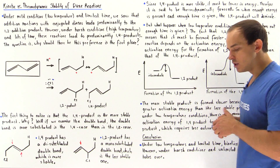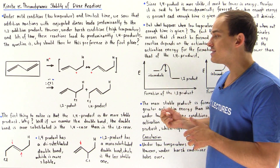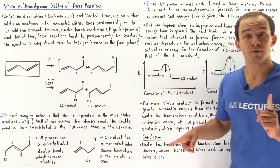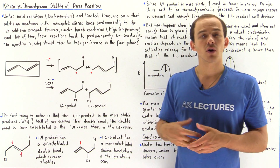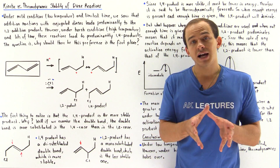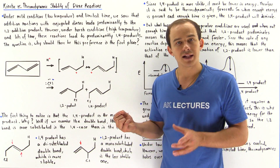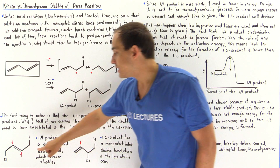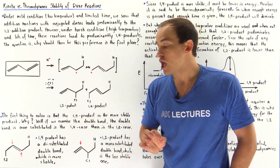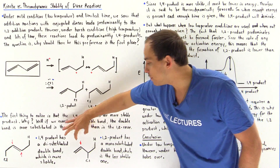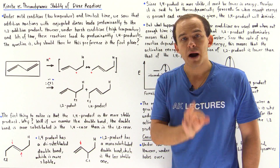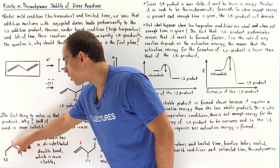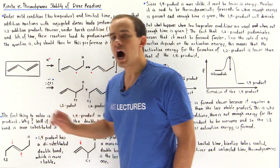The first question is which of these two products is more stable. The 1,4 product is the more stable product — but why? The answer lies in an examination of the double bond. In the 1,4 product, the double bond is di-substituted, bonded to two carbons. In the 1,2 product, the double bond is mono-substituted, bonded to only a single carbon on one side.